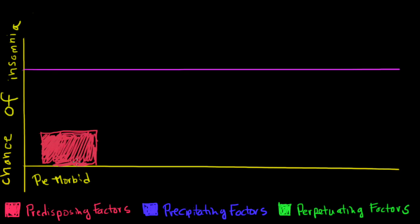Now you can see here, this is the summation of all the problem, and it's well short of the threshold that's going to cause insomnia. This line is the insomnia threshold. Since you're below the insomnia threshold, you don't have insomnia.